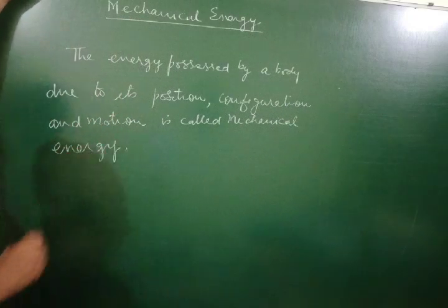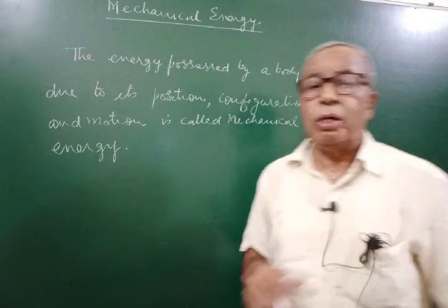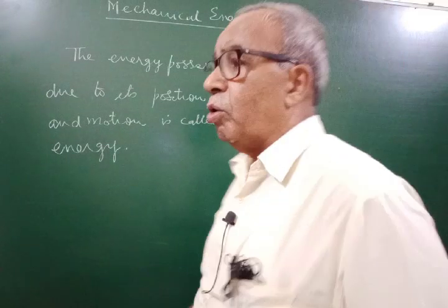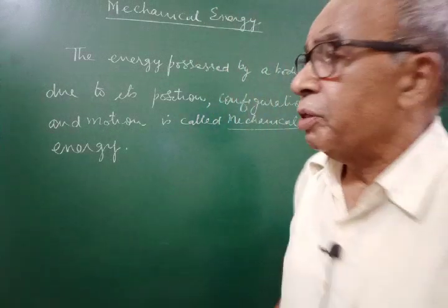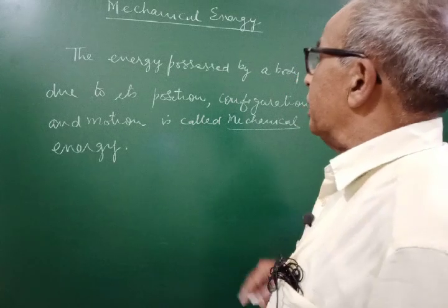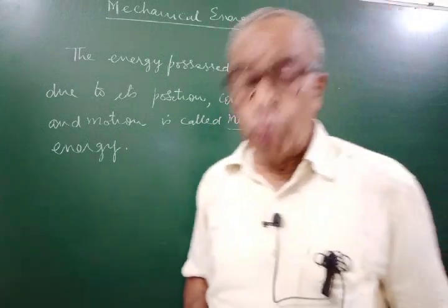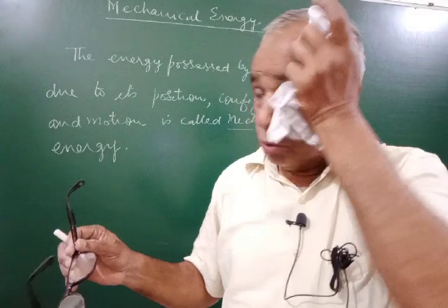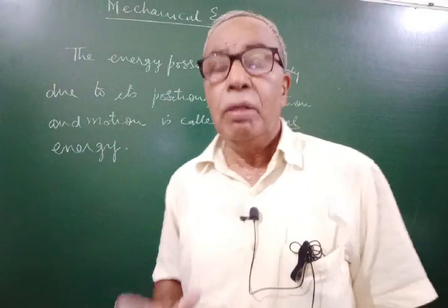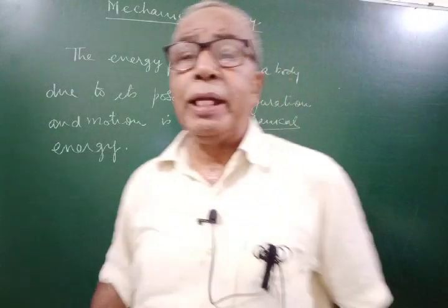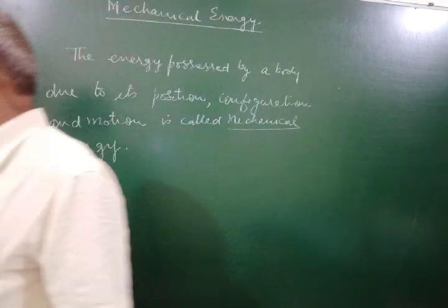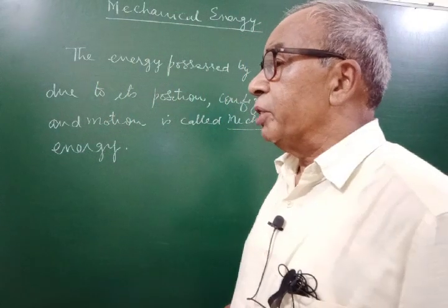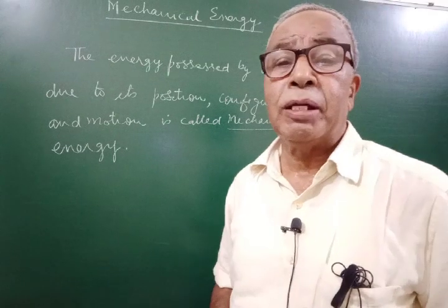We are students of science and physics especially, so we should understand the word meaning. The word 'mechanical' comes from mechanics — the branch of physics in which we study objects at rest or in motion. Energy is the capacity or ability to do work, and work done W = F·d. Some force is required to do work, and that work done appears in the form of energy. If force is perpendicular to displacement, there is no mechanical work.